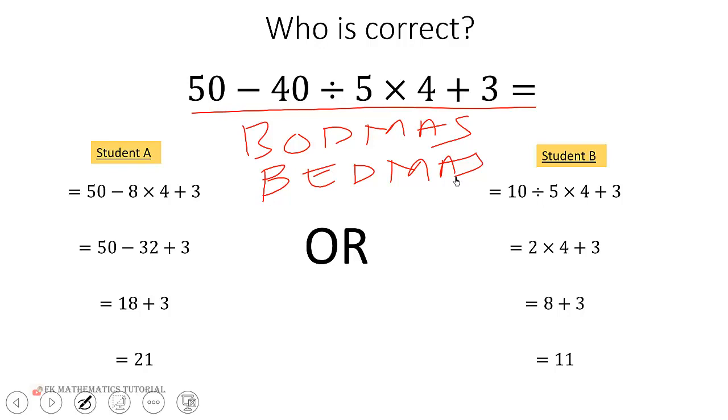So since these and these are not present, the first thing we have to do is division multiplication from left to right. So we are going to divide first. So 40 divided by 5 will give us 8. This student did that so that is correct.